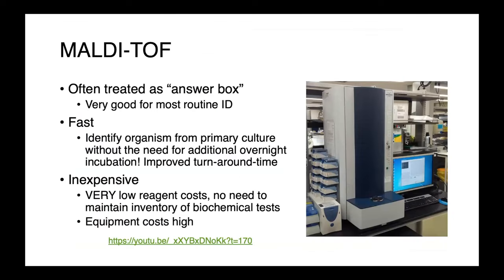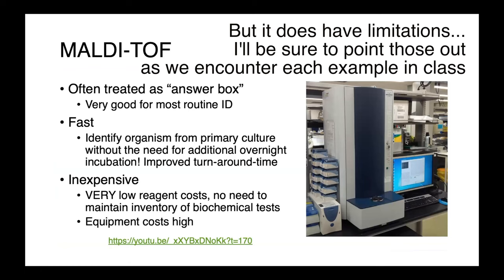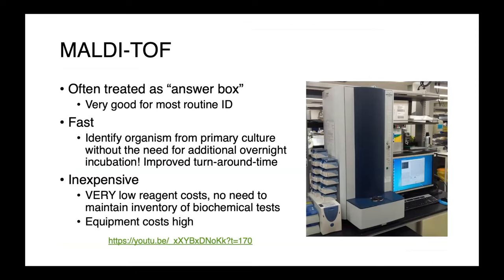MALDI-TOF is oftentimes treated as kind of an answer box. It performs very well for most routine identifications and has some huge advantages over classical biochemical tests. It's very fast — it allows us to identify an organism from primary culture. We can take just a single isolated colony, and that provides enough material to get a species-level identification without needing another overnight incubation. This improves turnaround time and the quality of service the lab is able to provide. It's also inexpensive, at least in terms of reagent costs, with no need to maintain a large inventory of biochemical tests.